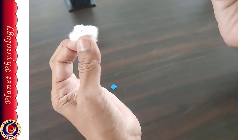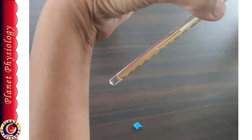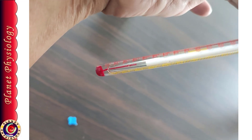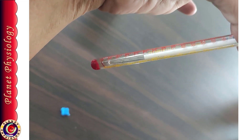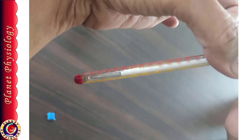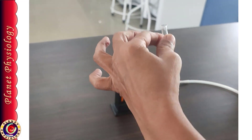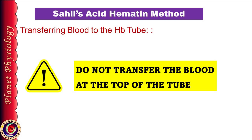Once the blood sample is collected, wipe off the blood from the tip of the pipette and immediately transfer it into the hemoglobin tube. Insert the pipette till the end of the tube and blow out the blood sample into the acid. Rinse the pipette gently by drawing the acid and blowing it back into the tube 2 or 3 times — this transfers the entire blood from the pipette into the tube. A common mistake is blowing out the drop at the top of the tube, which doesn't transfer the entire blood sample into the acid and gives a false lower value.